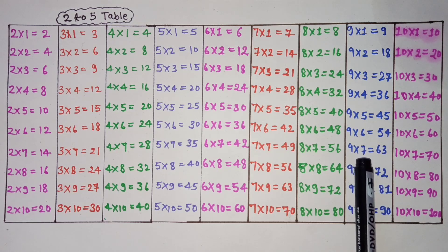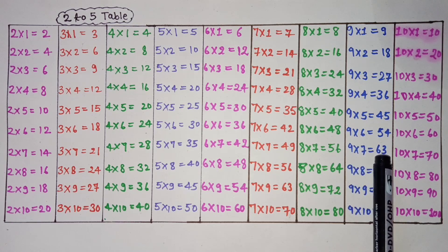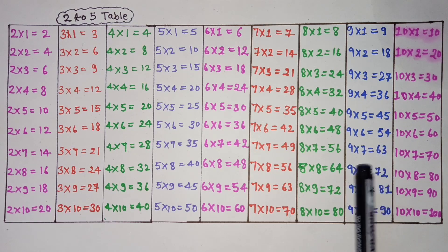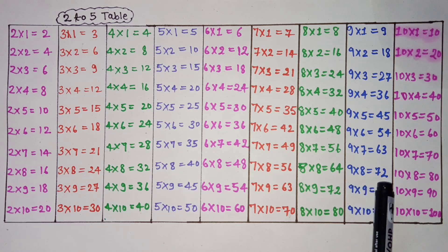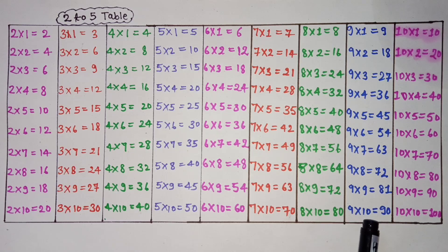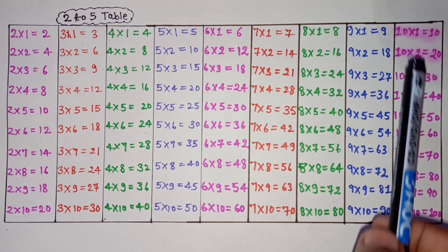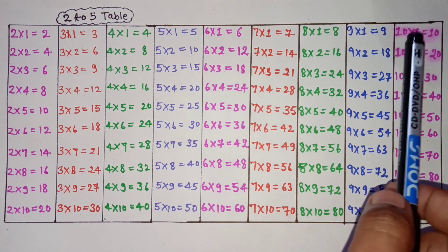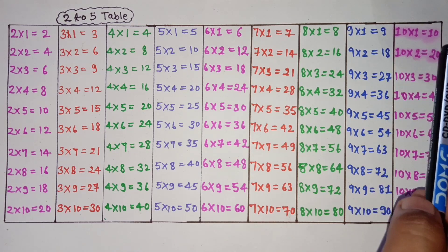9 7s are 63, 9 8s are 72, 9 9s are 81, 9 10s are 90. 10 ones are 10.